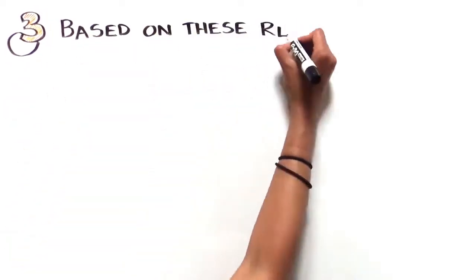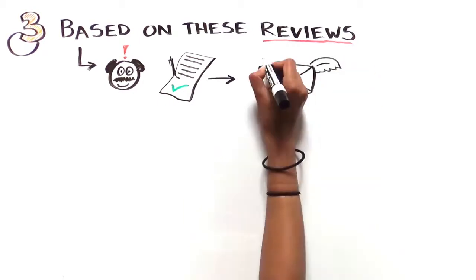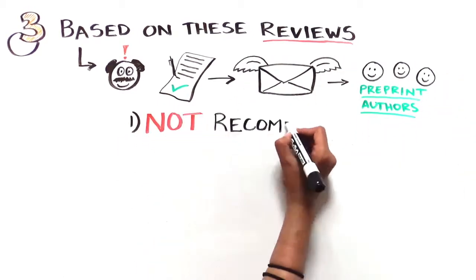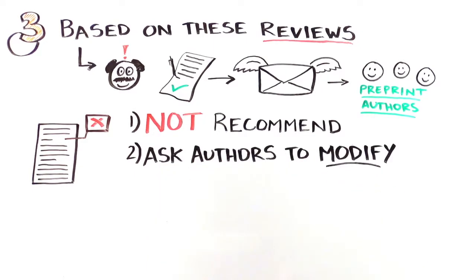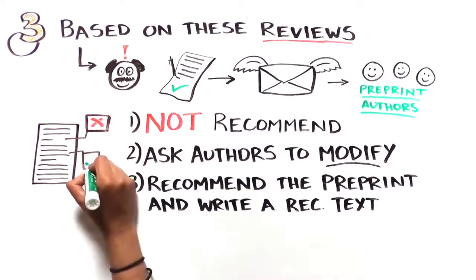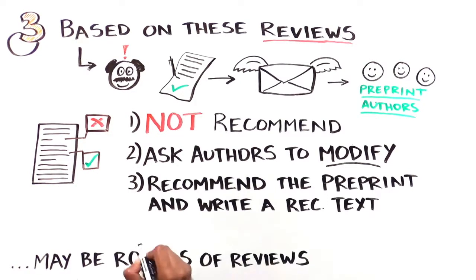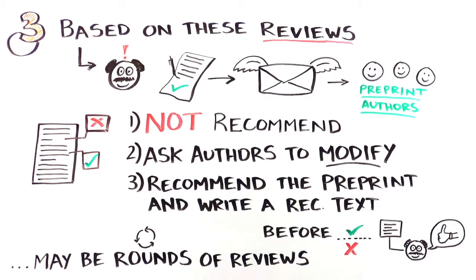Step 3: Based on these reviews, you then write and send your decision to the authors through the PCI website. You can choose either to not recommend the preprint, to ask the authors to modify their preprint, or to recommend the preprint and write a recommendation text. Like in a traditional journal, there may be several rounds of reviews and revisions before you reach the decision to recommend or not the preprint.